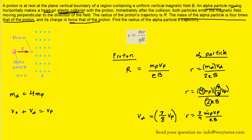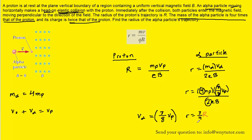Making the final substitution, that quantity is replaced with uppercase R. We can therefore see that the radius of the alpha particle's trajectory is three-fourths of the radius of the proton's trajectory.